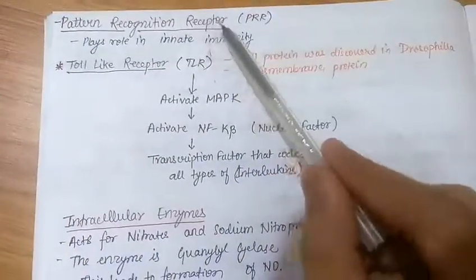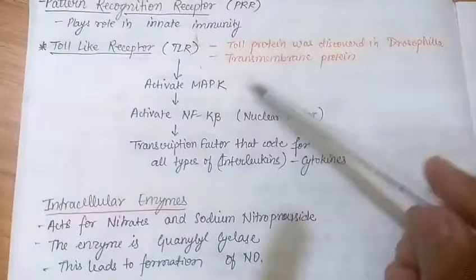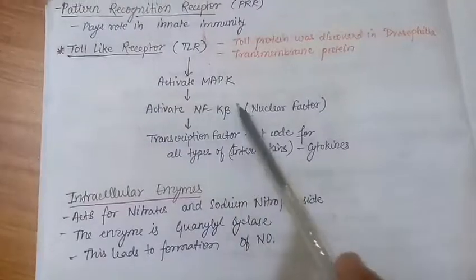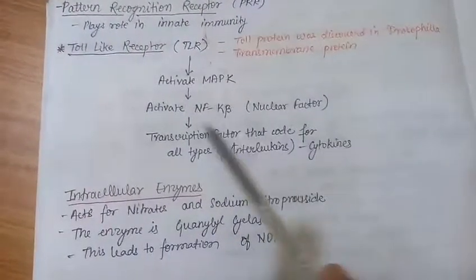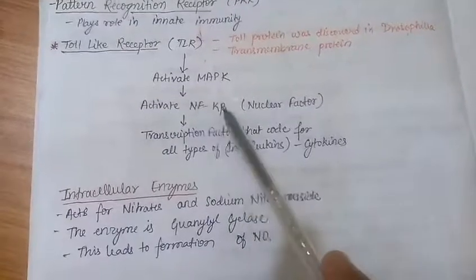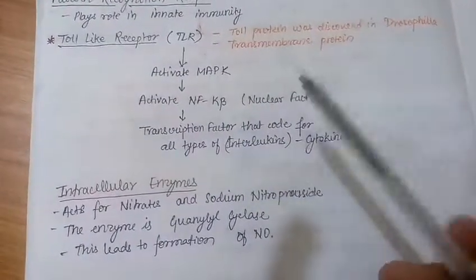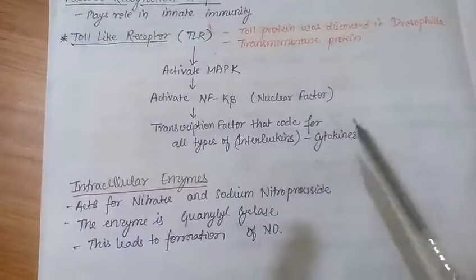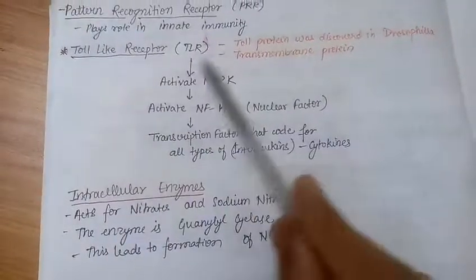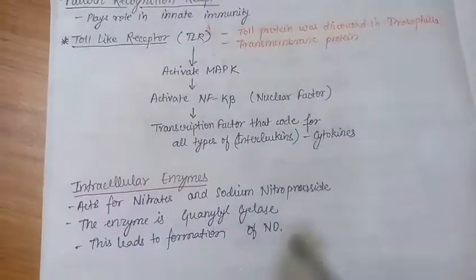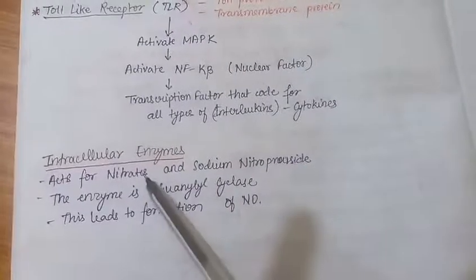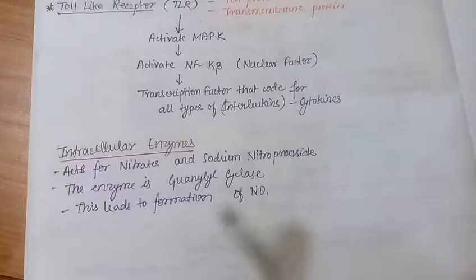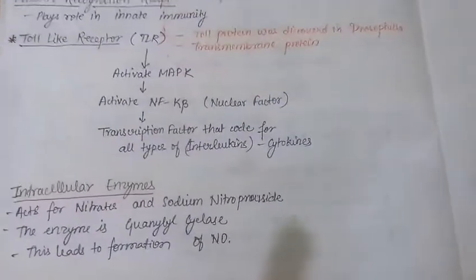The next type is pattern recognition receptors (PRR), which mainly play a role in innate immunity. One type is the Toll-like receptor (TLR). When activated, TLR activates MAP kinase and NF-κB (nuclear factor kappa B) — an important transcription factor that induces transcription and helps code for all types of interleukins, potentially causing inflammation. Finally, certain drugs such as nitrates and sodium nitroprusside act on intracellular enzymes — one example is guanylyl cyclase, which leads to formation of cGMP.